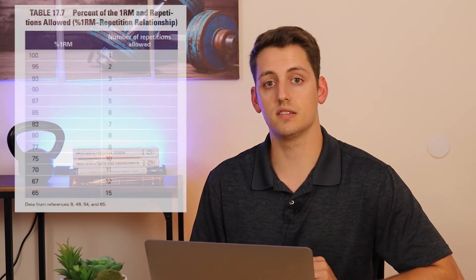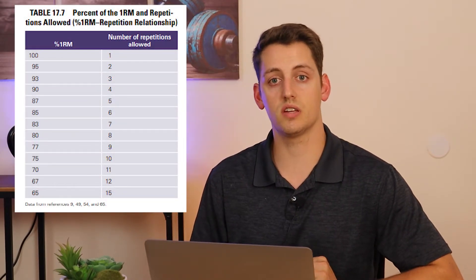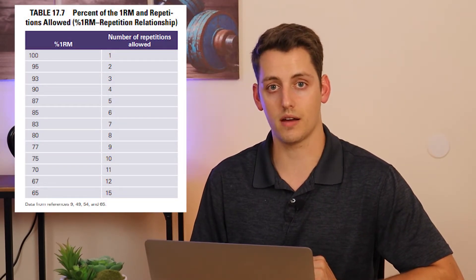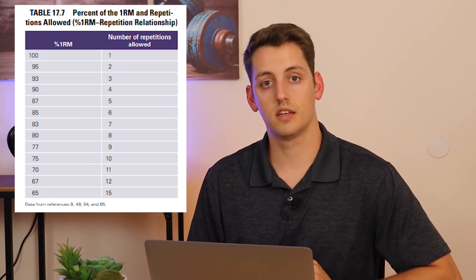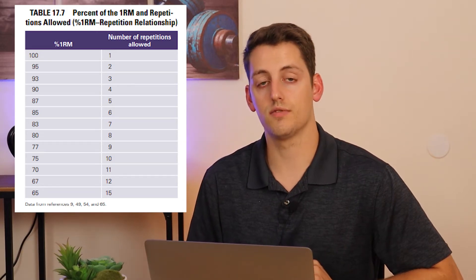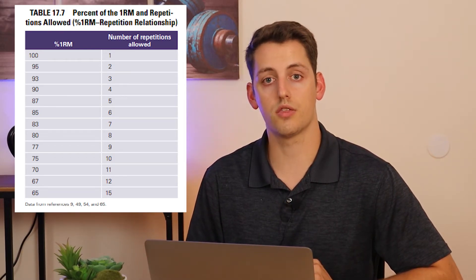In this example, you must know that a five rep max is estimated to be 87% of an athlete's one rep max. Therefore, dividing the five rep max by 0.87 gives you an estimated one rep max of 344.83 pounds, which rounded to the nearest pound is 345 pounds, giving us the answer of A.